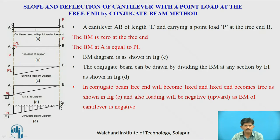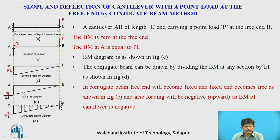Now we will draw the M/EI diagram where the bending moment is divided by EI. Then we draw the conjugate beam — the fixed support becomes free and the free end becomes fixed. Since the bending moment is negative (hogging), the loading of the conjugate beam will be upward, as shown in the figure. The load intensity at A is P/EI.